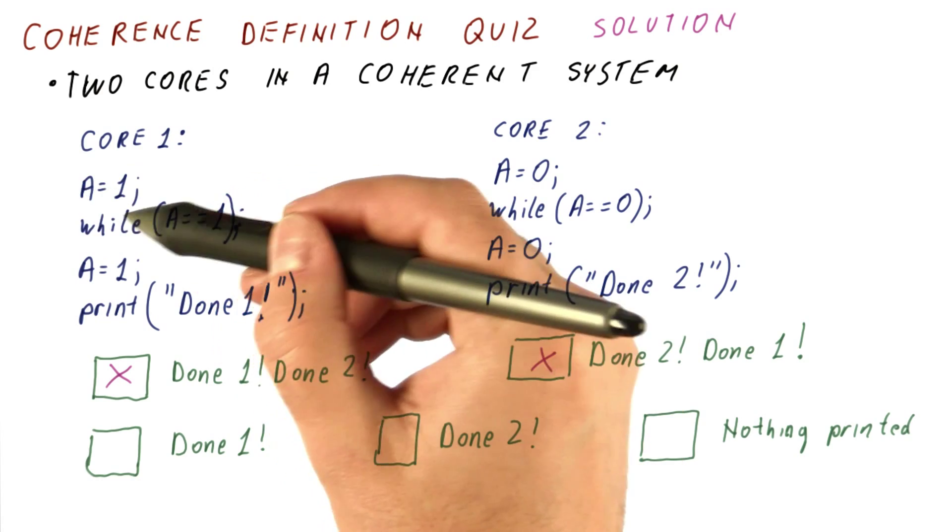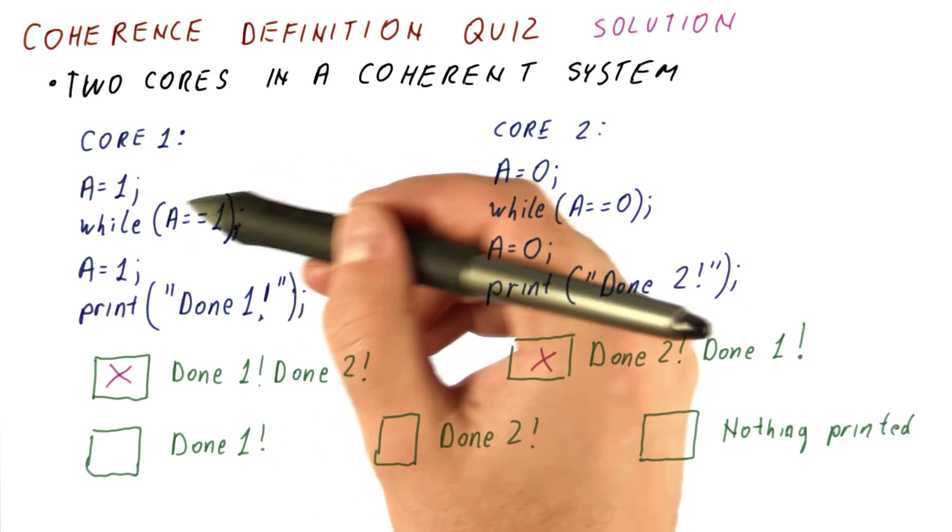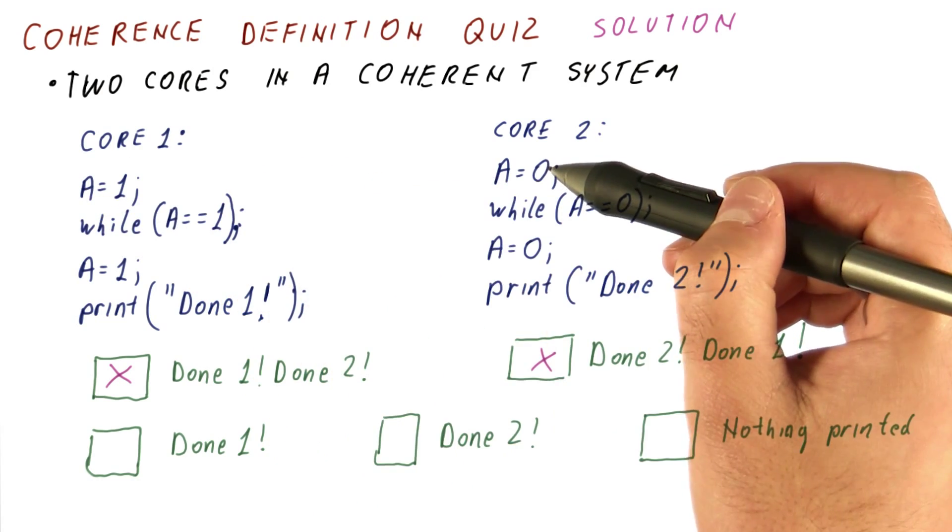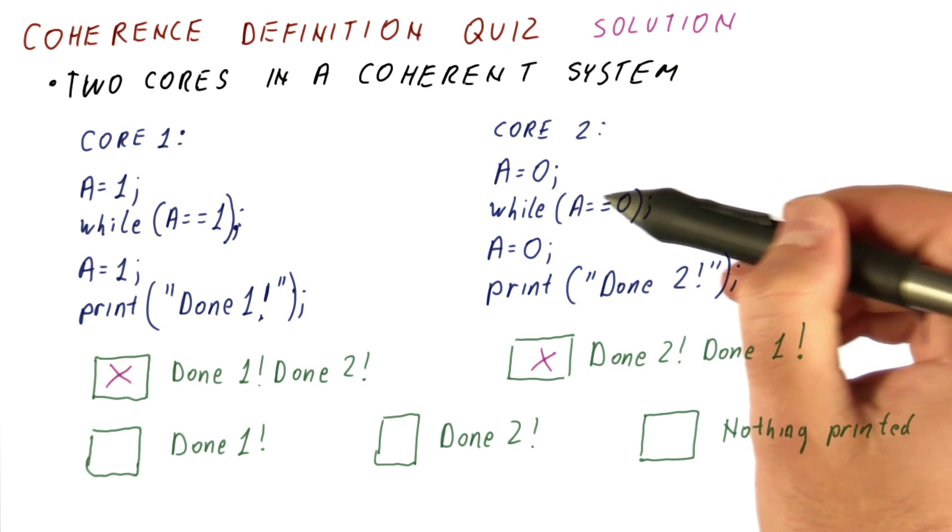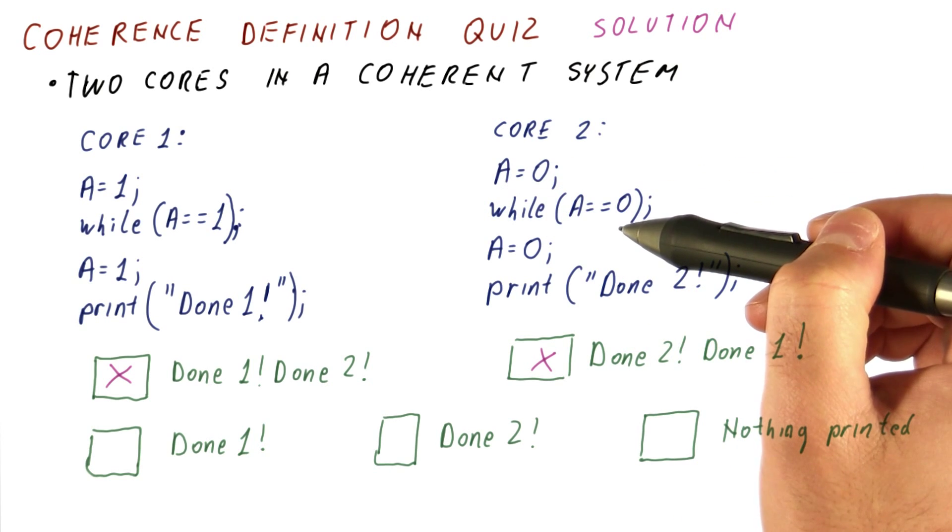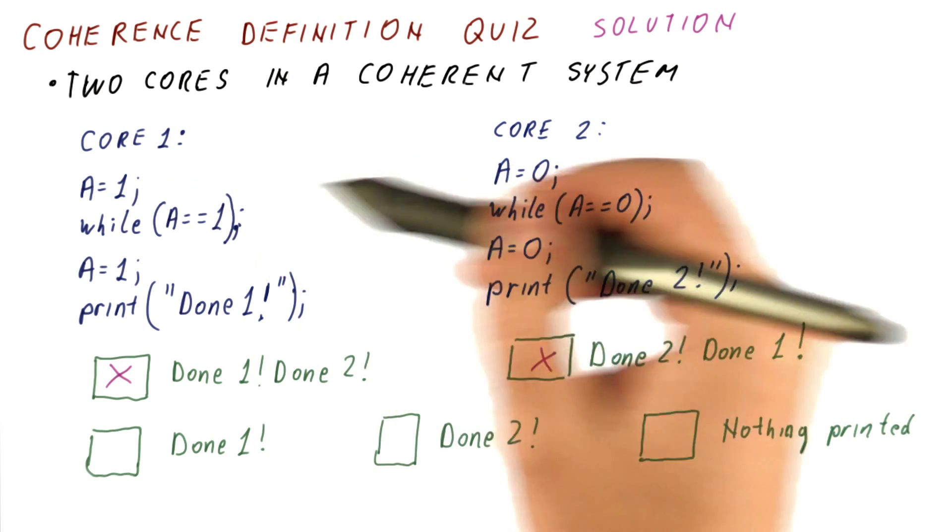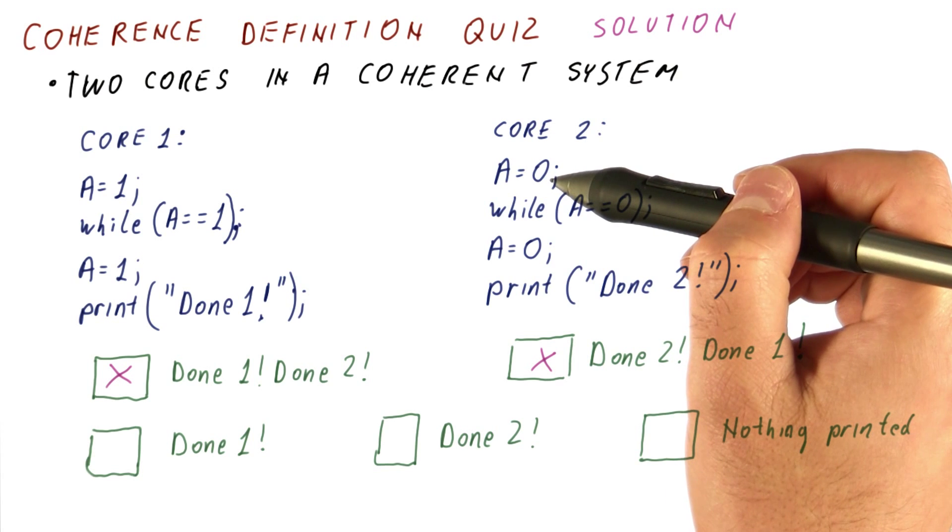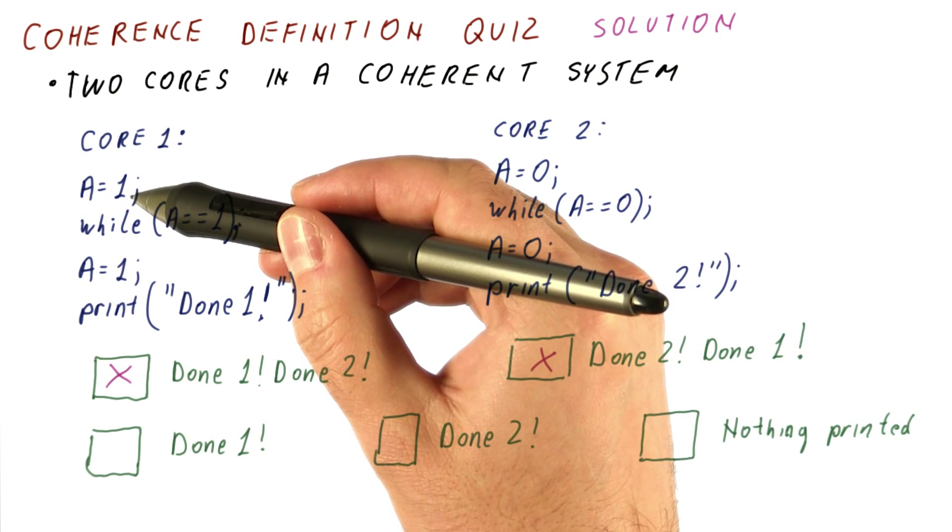While core two thinks this was the last write, and then gets stuck here. Because the third part of the coherence definition says that both of them have to think that the same access was the last one.